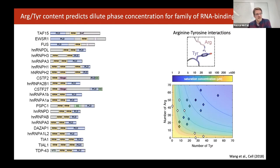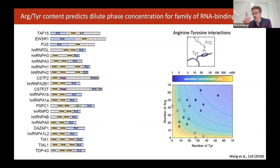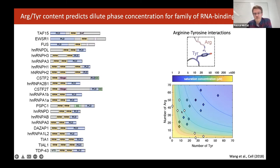This was really exciting — it suggested it might be possible to predict why some proteins phase separate at very low concentrations, others only at very high concentrations, and to bring some order to the seeming chaos of which proteins phase separate and which don't. But this was only part of the story — it was only telling us about the saturation concentration. I was really keen to know what the condensed phase concentration would be.